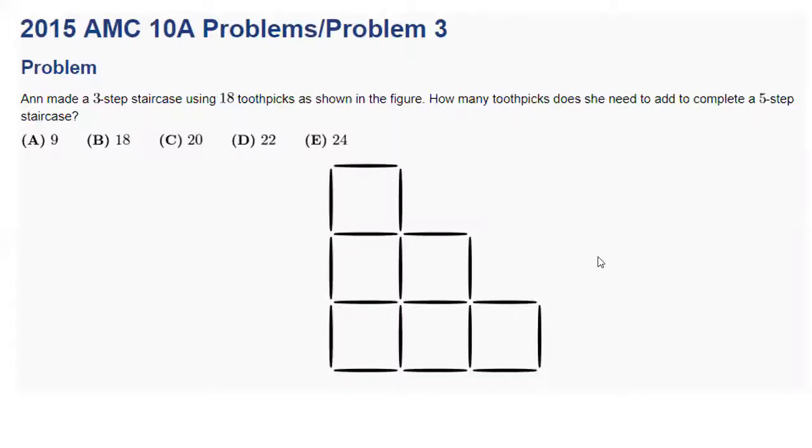Today we will be taking a look at the 2015 AMC-10A problem number three. Ann has made a three-step staircase using 18 toothpicks as shown in the figure. How many toothpicks does she need to add to complete a five-step staircase?